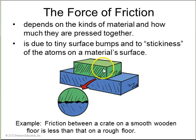An example here is the friction between a crate on a smooth wooden floor is less than on a rough floor because there's fewer bumps on the smooth floor.